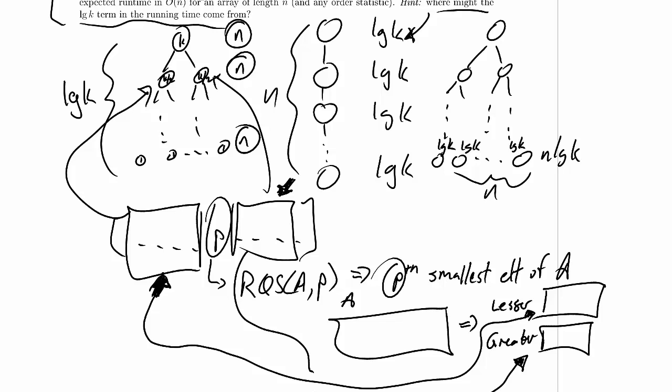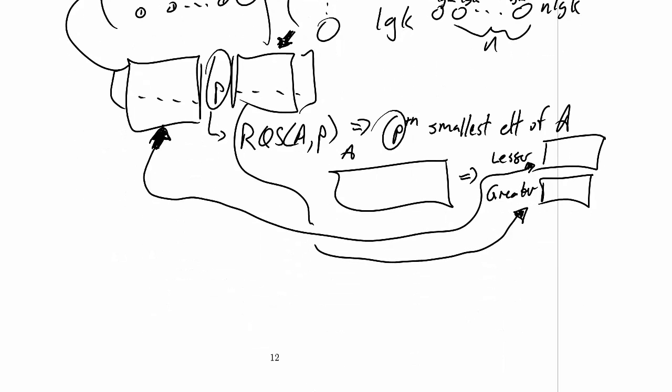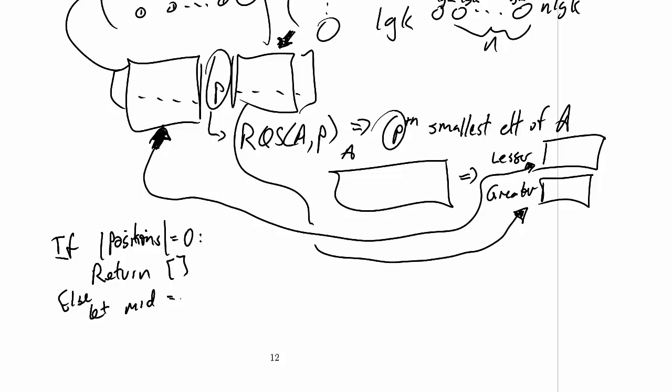We've subdivided the problem, though there's no guarantee lesser and greater are the same length. For the pseudocode, the base case is: if the length of positions equals zero, return an empty array. Otherwise, let mid be the length of positions divided by two. We'll leave the function name as 'find all' and fill in the parameter list once we determine what it should be.